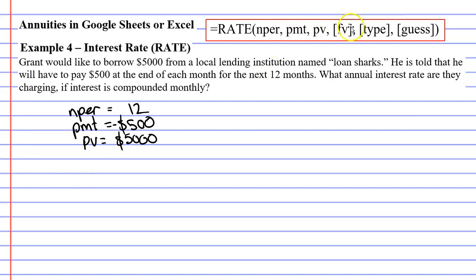Next we've got our future value. And because it's a loan, and we're trying to pay it off, our future value will be $0, because by the end of the time period, we want to owe the loan sharks nothing.